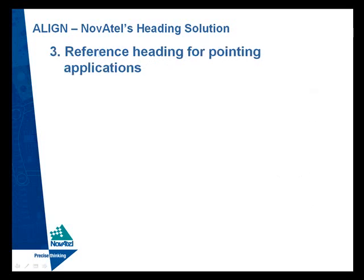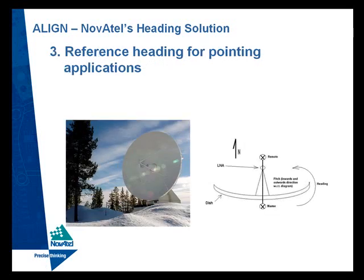In the third application — reference heading for pointing — the Align product heading and pitch data is used for pointing a dish antenna at a specific location.